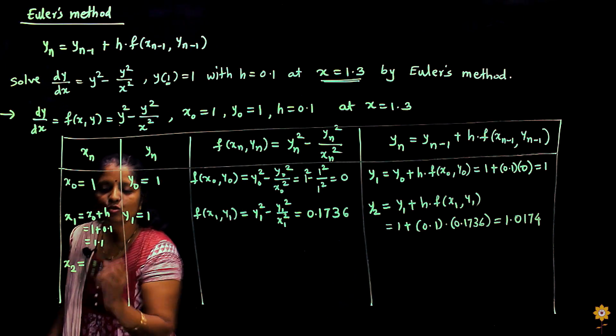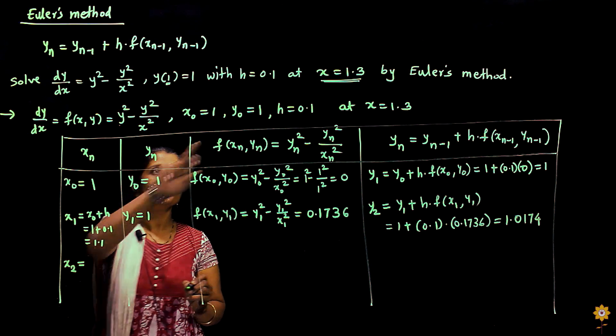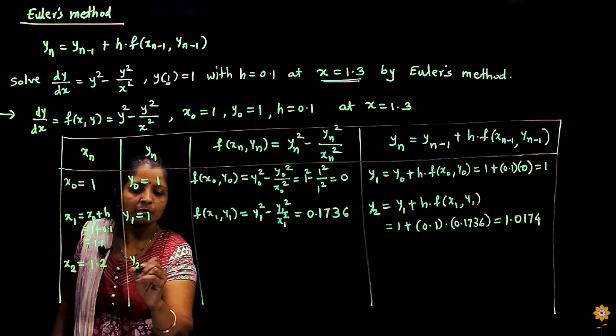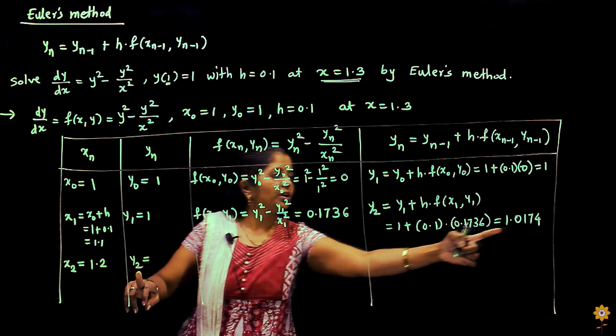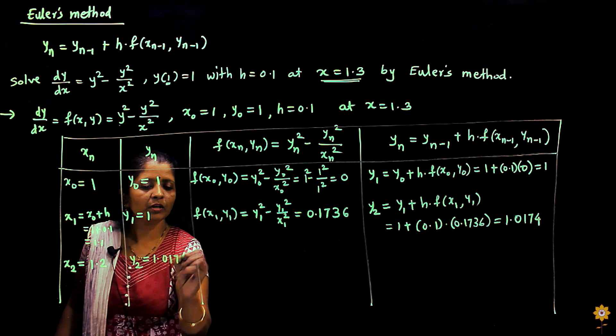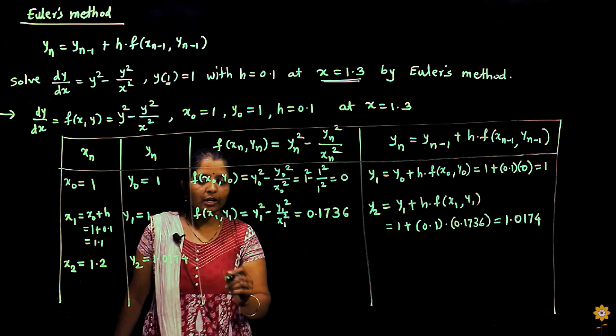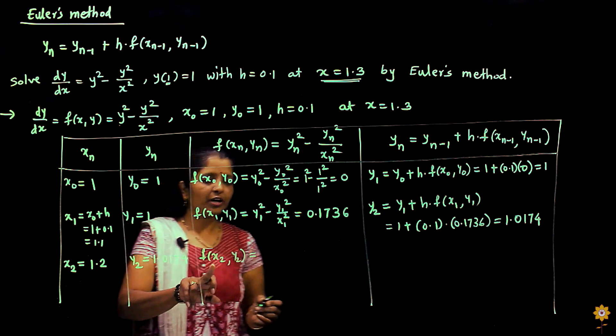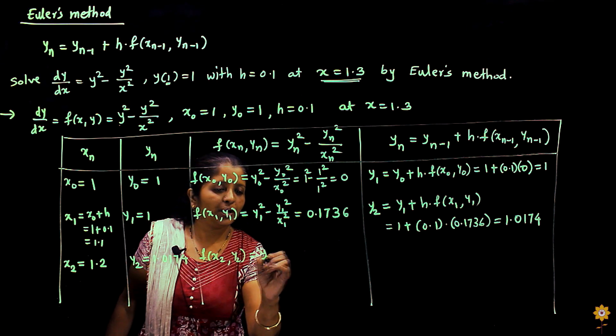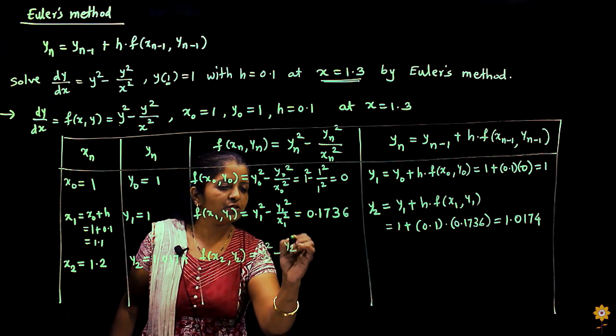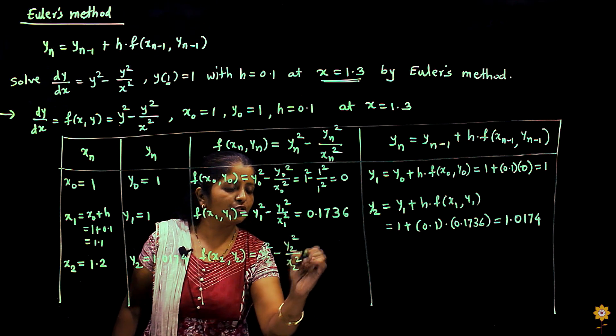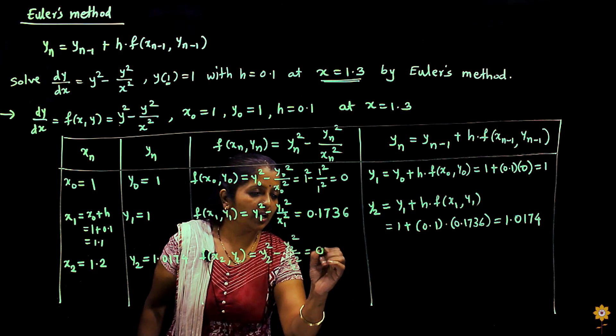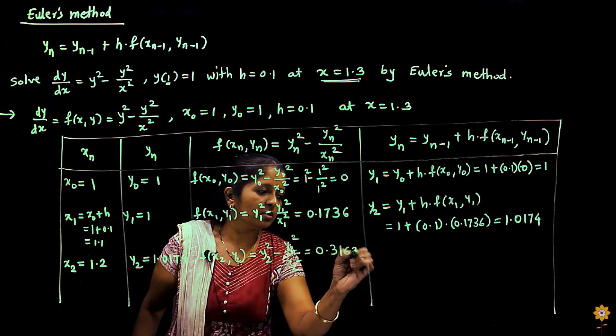The next value of x is x2. x2 will be x1 + h, so 1.1 + 0.1, that is 1.2. y2 which we have calculated over here, that is 1.0174. Now find out f(x2, y2). So f(x2, y2) is y2² minus y2²/x2². If you substitute these values and calculate, you will get the answer as 0.3163.